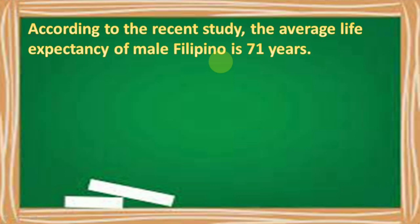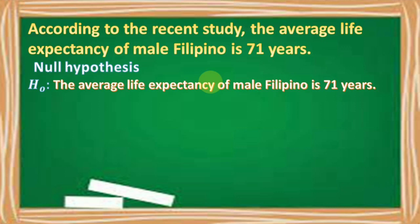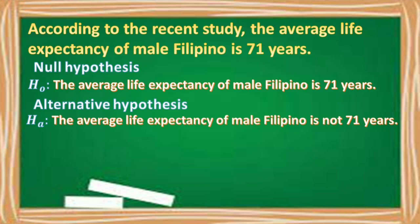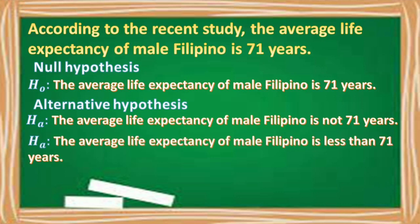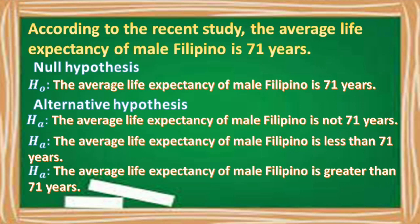Let's have another example. According to a recent study, the average life expectancy of male Filipinos is 71 years. For our null hypothesis, it will be: the average life expectancy of male Filipinos is 71 years. And for the alternative hypothesis, we can have: the average life expectancy of male Filipinos is not 71 years, or less than 71 years, or greater than 71 years.